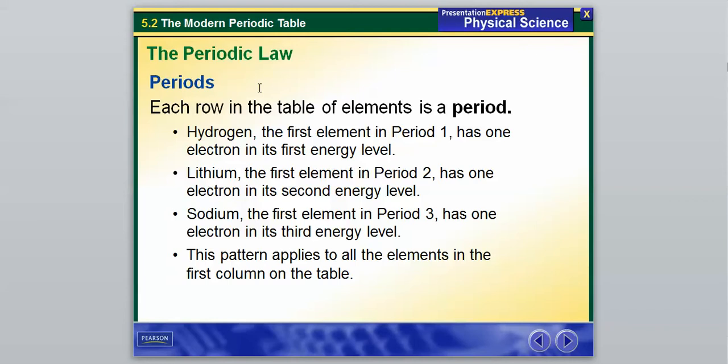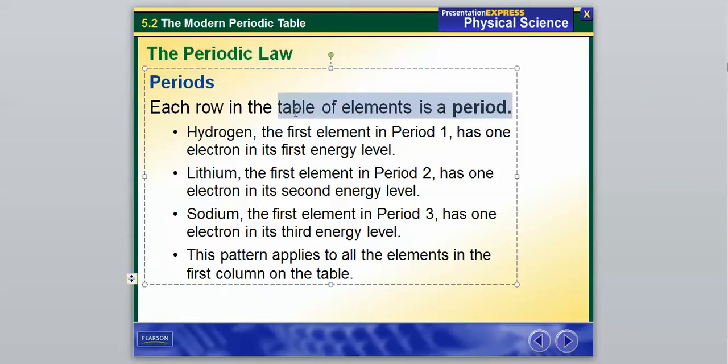So each row in the table of elements is known as a period. So we can't just call it a row, it has a special name as a period. So hydrogen is the first element in period 1. It has only one electron in its first energy level. Lithium, the first element in period 2, has one electron in its second energy level. Sodium, the first element in period 3, has one electron in its third energy level. And this pattern applies to all the elements in the first column on the table.